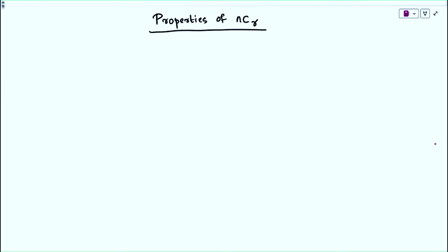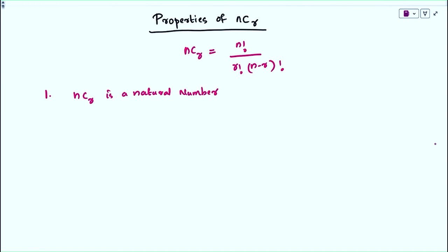Next, we discuss some properties of nCr. We know nCr = n! / (r! × (n−r)!). The first property is that nCr is a natural number — we cannot get fractional numbers. The second property is nC0 = nCn, which means both equal 1.